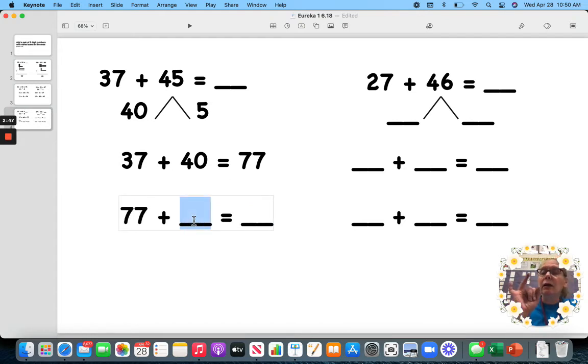So, 7, 8, 9, 10, 11, 12. I'm going to add 12 to this number. Pretty easy. 7 and 2 more is a 9. And add 1.